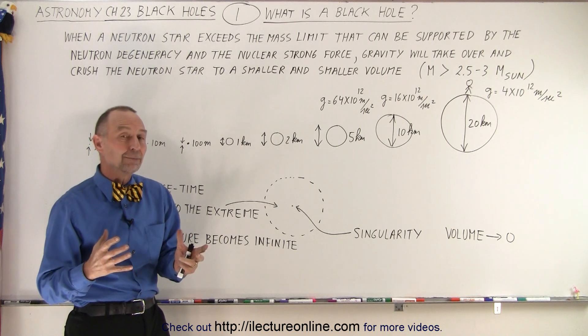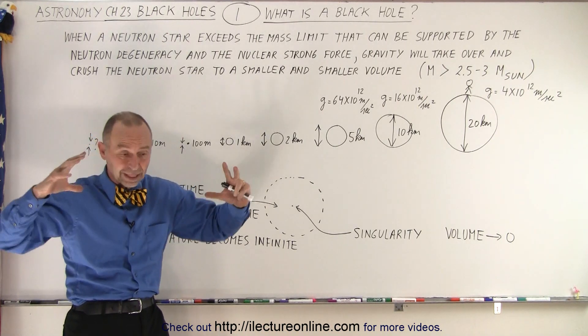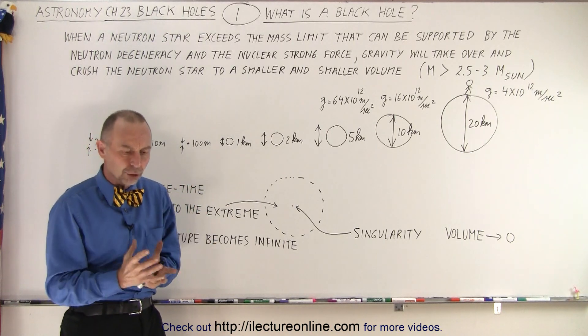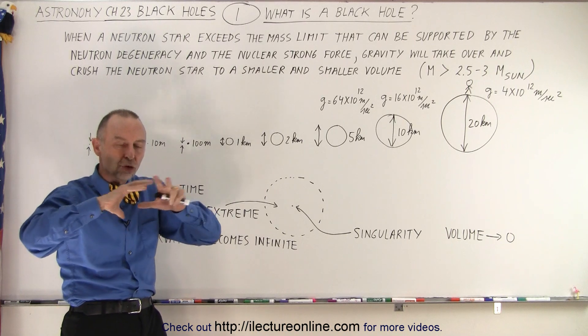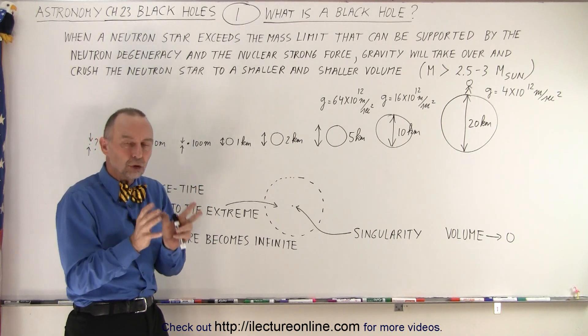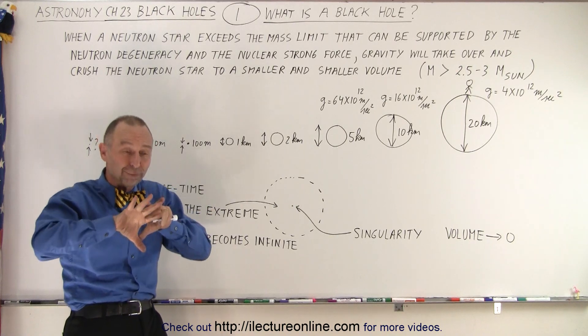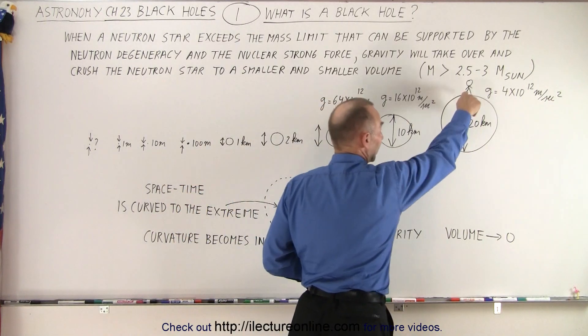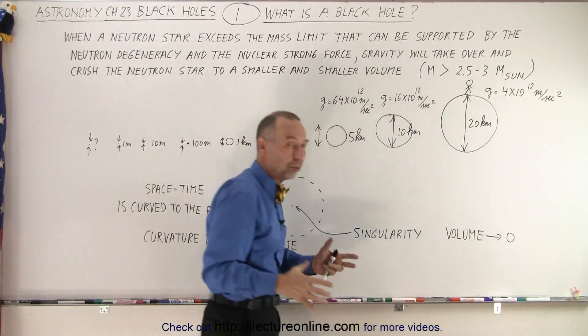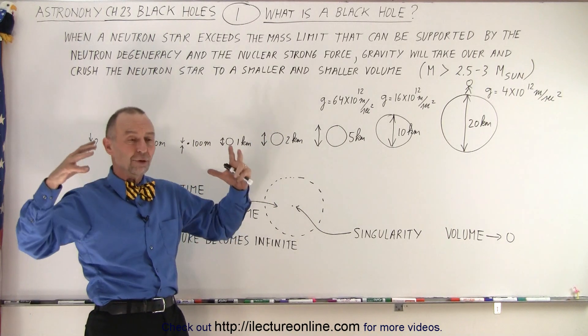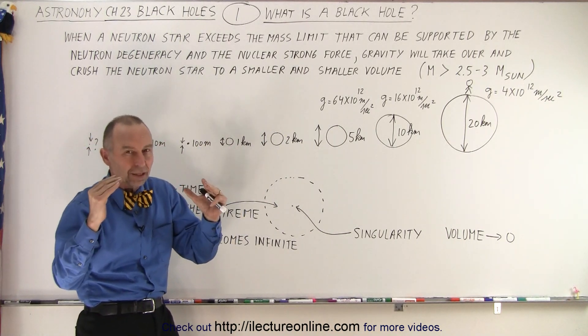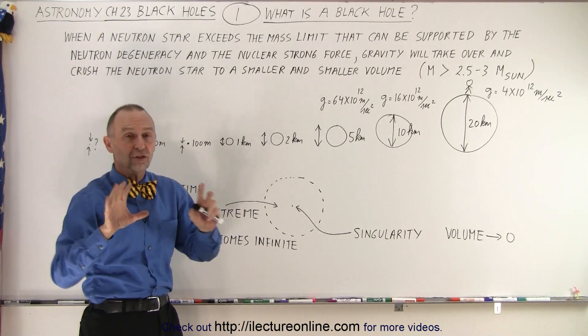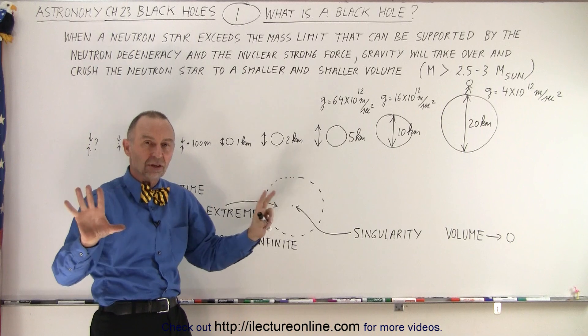So what can happen beyond that? Well, it turns out what holds a neutron star from collapsing even further, because the gravitational forces at that point are just absolutely enormous, is the neutron degeneracy and the nuclear strong force pushing back against gravity. At that point, by the time the neutron star has a diameter of 20 kilometers or a radius of 10 kilometers, the gravity forces are so enormous that there's just a delicate balance between it trying to squish down the neutron star and the nuclear strong forces and the neutron degeneracy pushing back.